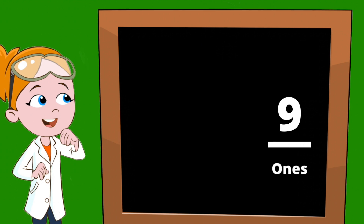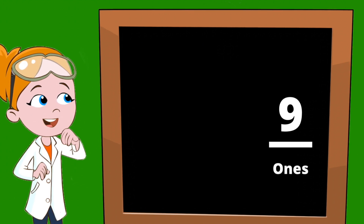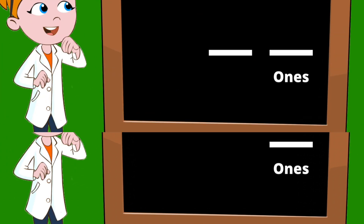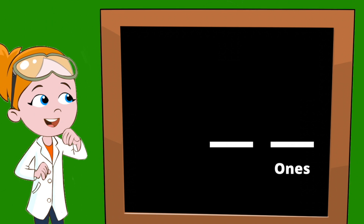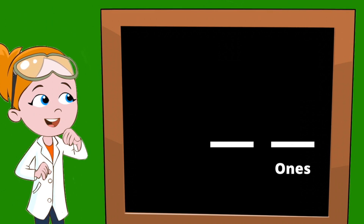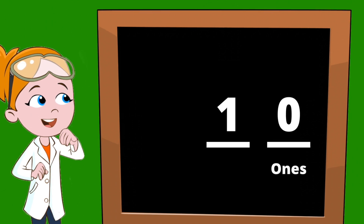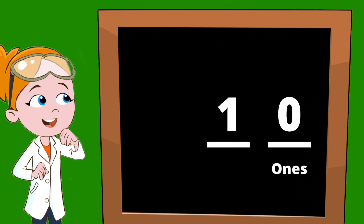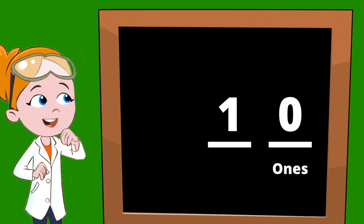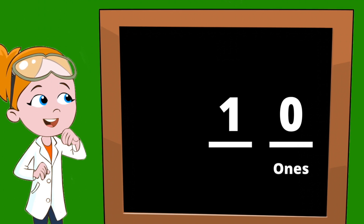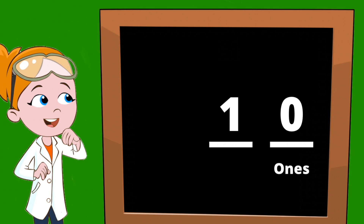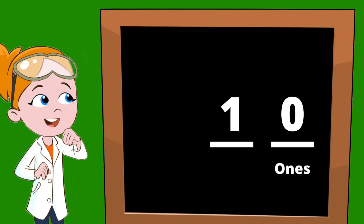But when we get to the number nine, we can't go any larger without adding a digit. So when we go to the number ten, we now have two digits. Our zero is in our ones category, so we don't have any ones at this time, but we do have our next digit, which is a one in our tens category.